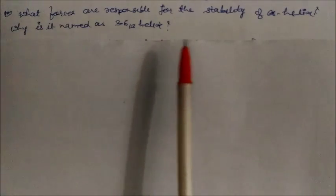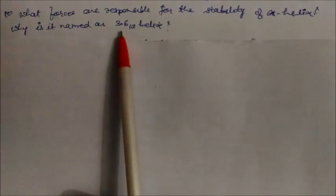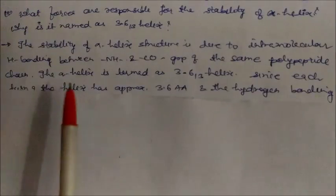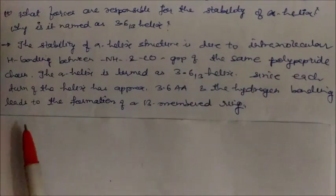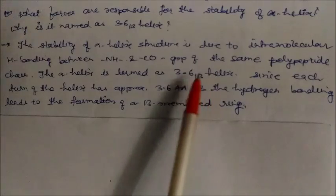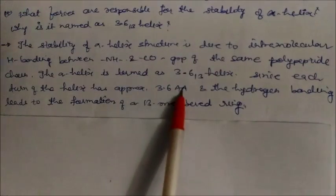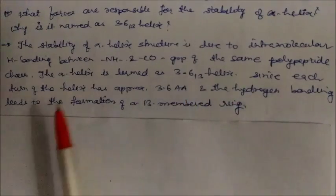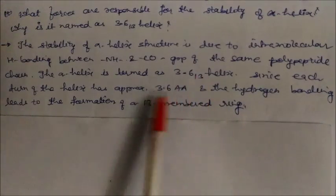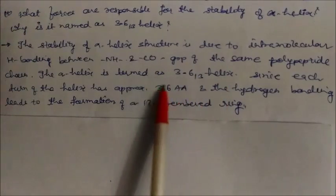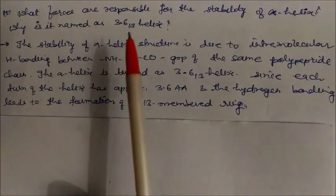What forces are responsible for the stability of the alpha helix, and why is it named the 3.6₁₃ helix? The stability of the alpha helix is due to intramolecular hydrogen bonding between the NH and C=O groups of the same polypeptide chain. It is called the 3.6₁₃ helix because each turn of the helix has approximately 3.6 amino acid residues, and hydrogen bonding leads to the formation of a 13-membered ring.